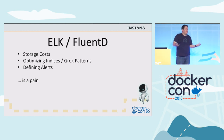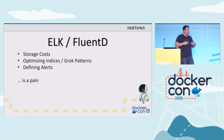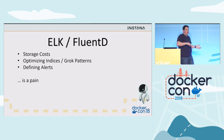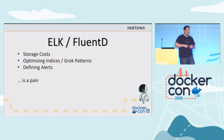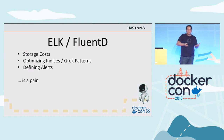ELK has the same storage cost if you want to retain logs for any amount of time. Optimizing indices is again on the storage cost — if you're going to keep log retention for months or years, you have to optimize those indices or you're just going to start throwing money away. Grok patterns are powerful and I hear that Graylog helps solve some of this problem. And again, defining alerts is a pain, and it's also a pain getting too many of those alerts.